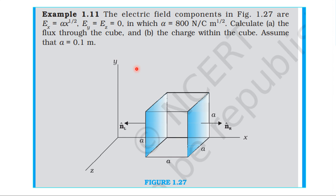The electric field is in the x-direction; the y and z components of the electric field are zero. The field is variable along x, varying as x to the power one-half. The constant alpha has the value 800 Newton per Coulomb per meter to the power one-half.